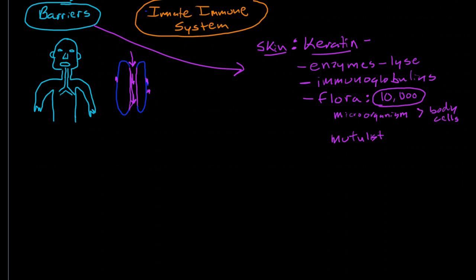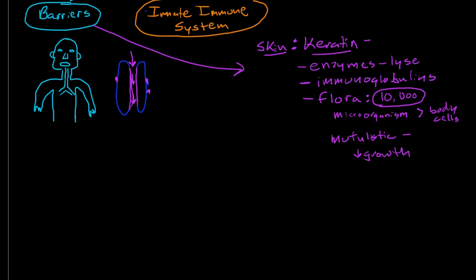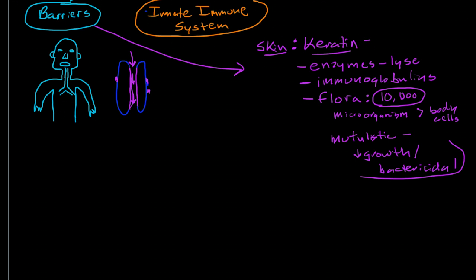The normal flora are mutualistic organisms—they live with us and we both help each other. They decrease the growth of harmful bacteria, suppressing growth of harmful bacteria, and they actually have some bactericidal activity as well. A lot of our antibiotics come from microorganisms like streptomycin and penicillin. Microorganisms have very strong antibiotic chemicals within them that prevent growth and can have bactericidal activity.